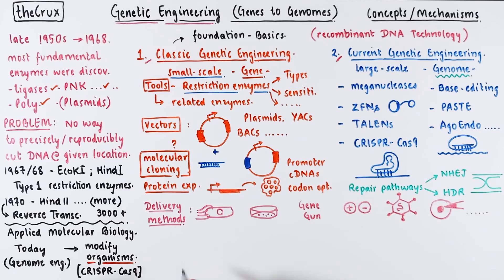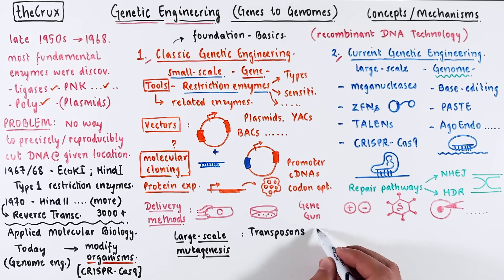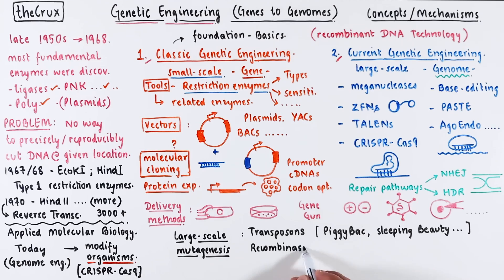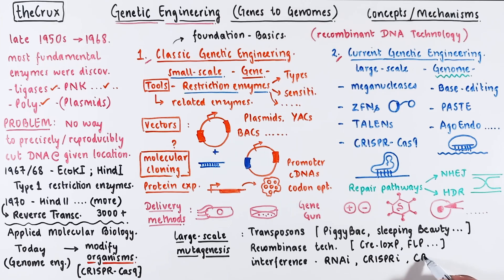Towards the end of this series, our focus will shift towards large-scale mutagenesis. This involves the use of transposons like piggyback, sleeping beauty, and others. Recombinase technologies like Cre-lox-P and FLP systems, as well as interference mechanisms like RNAi, are also quite useful for mutagenesis. More recently, CRISPR has also made its way into the interference realm. So that's on our agenda as well.